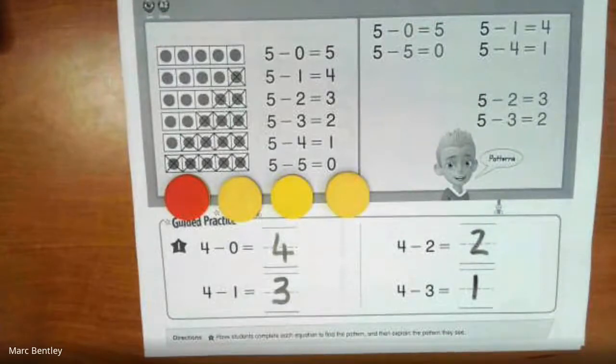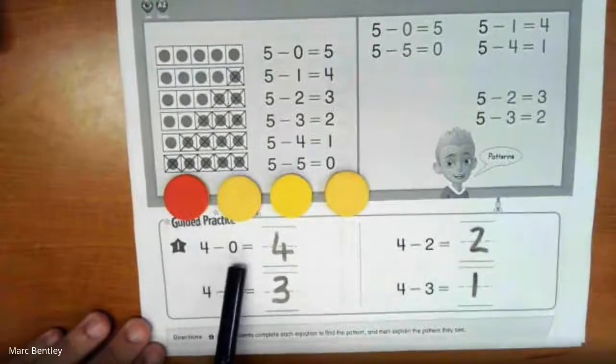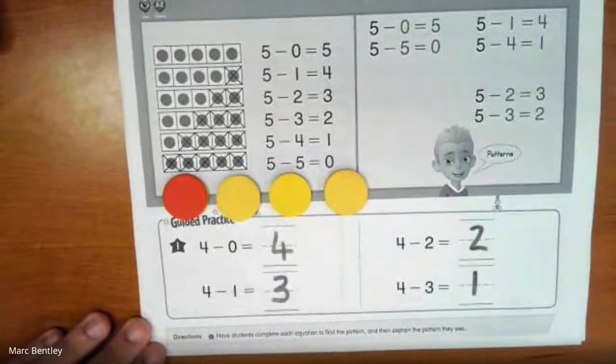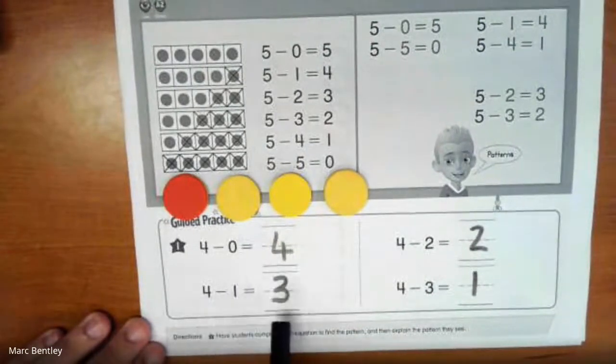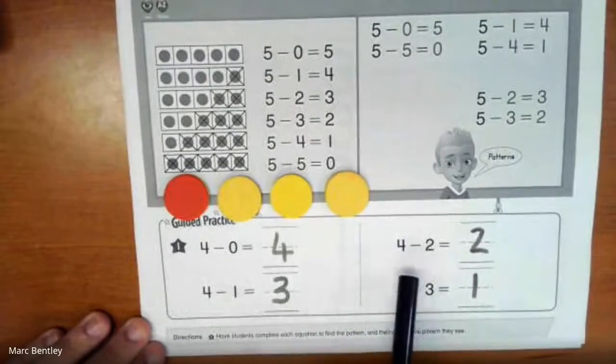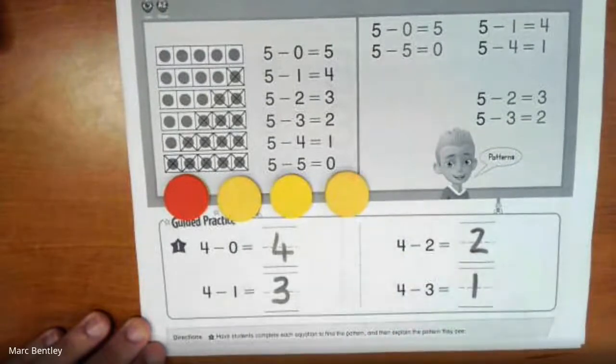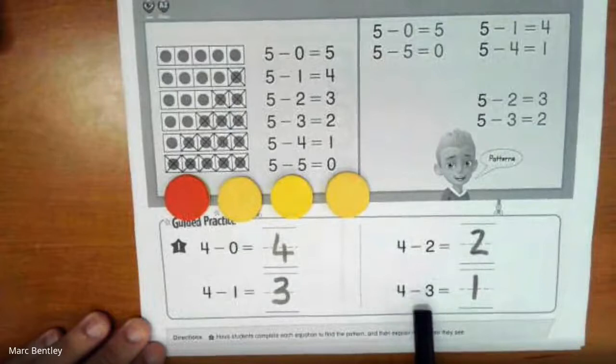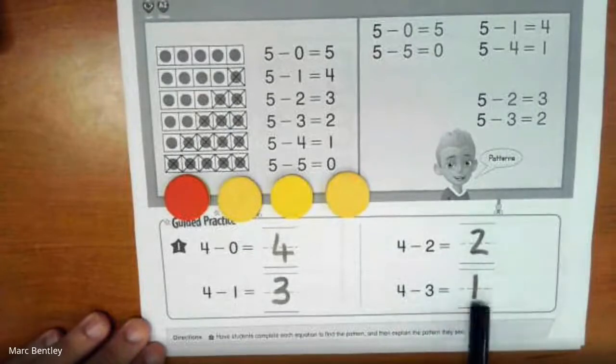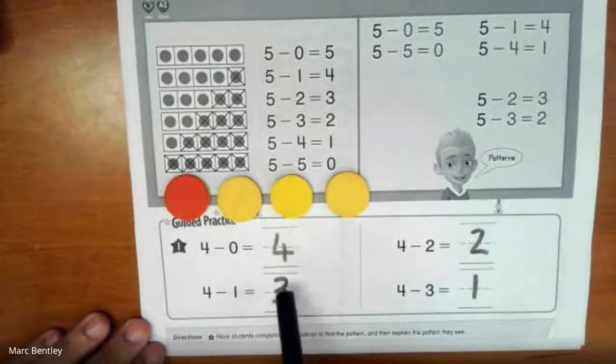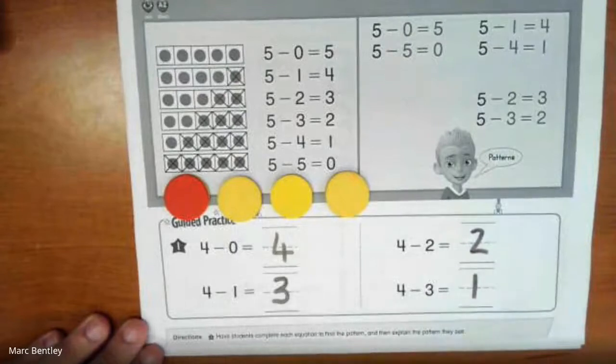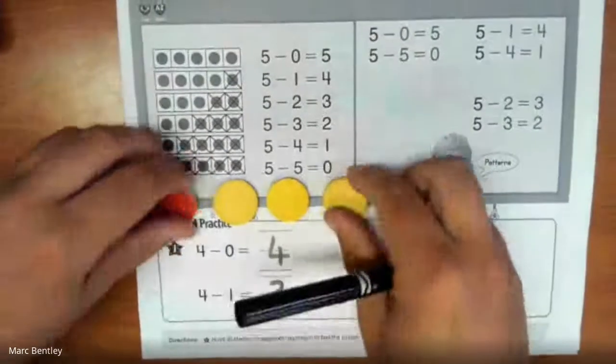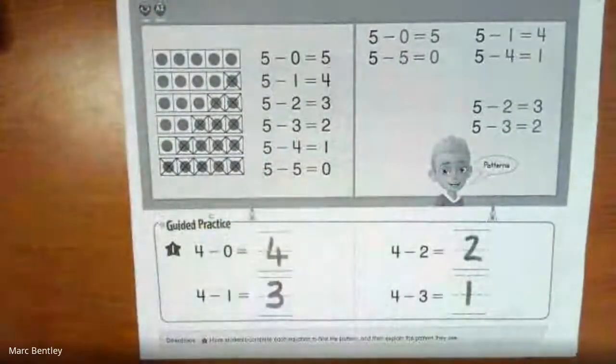So as you can see with our pattern, we are counting down because we had 4 minus 0 was 4. 4 minus 1 was 3. 4 minus 2 was 2. And 4 minus 3 is 1. We count down 4, 3, 2, 1. Okay, nice job. Let's turn the page.